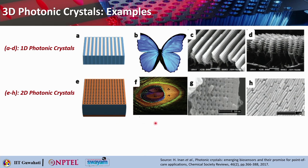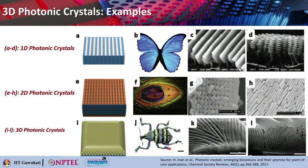For a 2D Photonic Crystal example, a peacock feather under SEM shows a 2D Photonic Crystal arrangement — that is why bright colors get reflected from the peacock feather. Then there is a particular beetle which also shows beautiful reflection. Under SEM, the periodicity is in all three dimensions, and that is why this beetle reflects beautiful colors and patterns. These are actual natural objects showing 1D, 2D, and 3D photonic crystal arrangements.